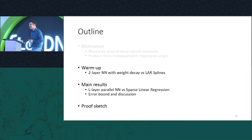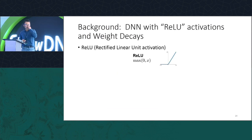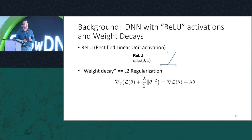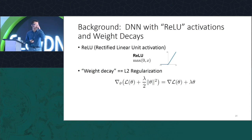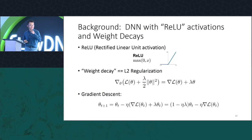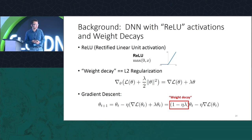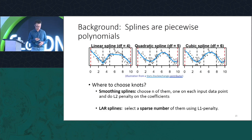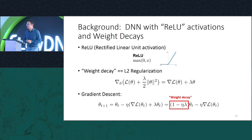Let's jump into the two-layer case as a warm-up, during which I'll introduce tools for analyzing the more general case. ReLU activation is basically a hinge-like function at zero — everything positive remains linear, everything negative is clipped to zero. By weight decay, I refer to standard L2 regularization, also called weight decay because in gradient descent there's an implementation that effectively decays the weights after every iteration. So whenever I say weight decay it means squared L2 regularization with a particular carefully chosen parameter lambda.